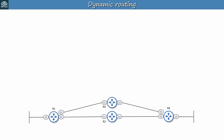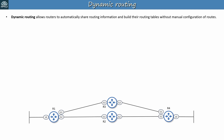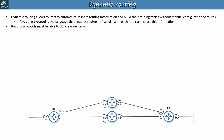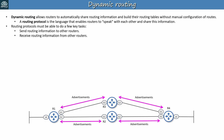So what is dynamic routing? Dynamic routing allows routers to automatically share routing information and build their routing tables without manual configuration of routes. A routing protocol is the language that enables routers to do so — they speak with each other and share the necessary routing information. There are several different routing protocols, but they all must be able to do a few key tasks. They must be able to send routing information to other routers, informing their neighbors about their known networks, and receive such routing information from other routers. Each protocol does this differently, involving exchanging some kind of route advertisement between neighboring routers. Once the information is being exchanged, the protocol must be able to perform the necessary calculations to determine the best route to each destination.